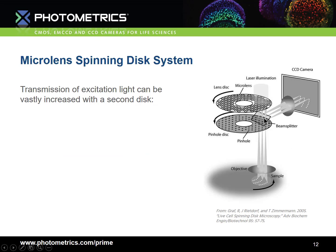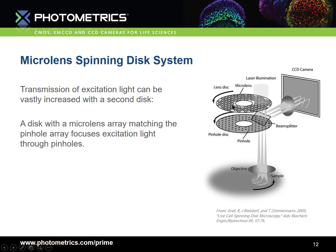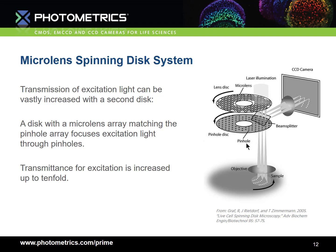One means of significantly improving the transmission of excitation light through the pinhole disk is to use a second disk. This disk contains a microlens array corresponding to the pinhole array on the first disk. These microlenses focus the excitation beam through the pinholes of the pinhole disk. Transmission for excitation light is therefore increased up to tenfold, however this has no influence on the amount of emission light detected.